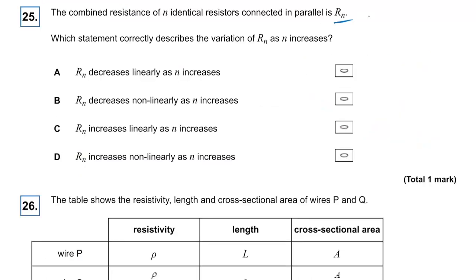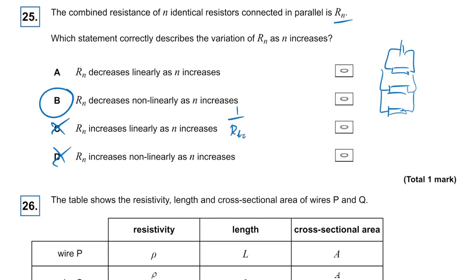Question twenty-five: the combined resistance of n identical resistors in parallel is Rn. As n increases, total resistance decreases because more parallel paths are added. One over R total equals n over R, so Rn equals R over n, meaning Rn is inversely proportional to n. Therefore Rn decreases non-linearly as n increases. The answer is B.